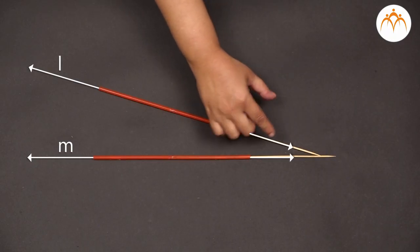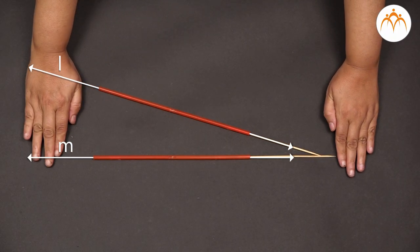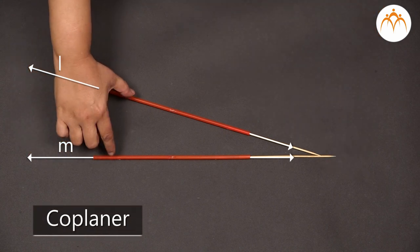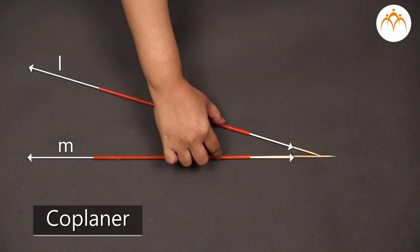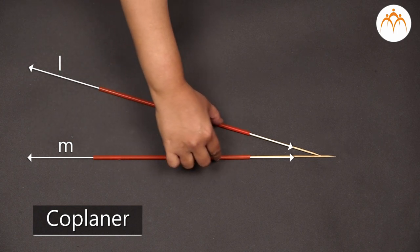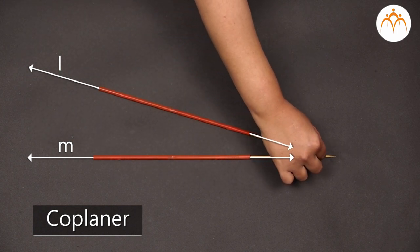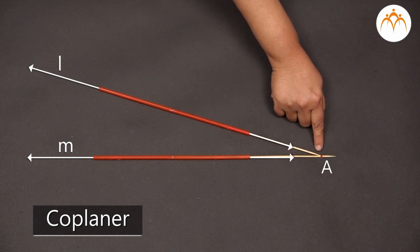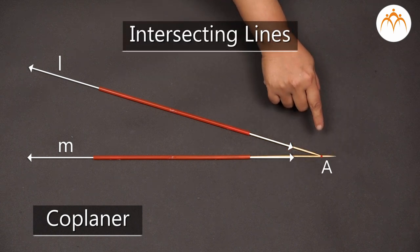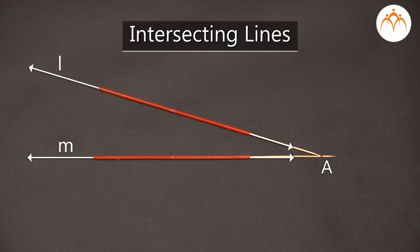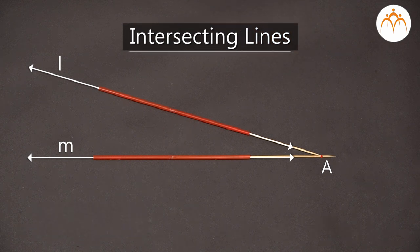Such lines, which lie in the same plane — hence called coplanar — but where the distance between them is not equal, so that when they are extended further they intersect each other at a point, are called intersecting lines. Now you know what intersecting lines are.